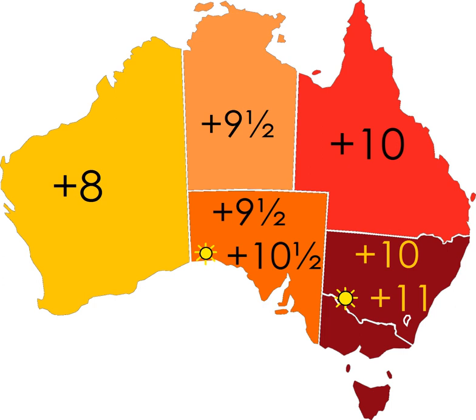Standard Time was introduced in the 1890s when all of the Australian colonies adopted it. Before the switch to Standard Time zones, each local city or town was free to determine its local time, called local mean time.